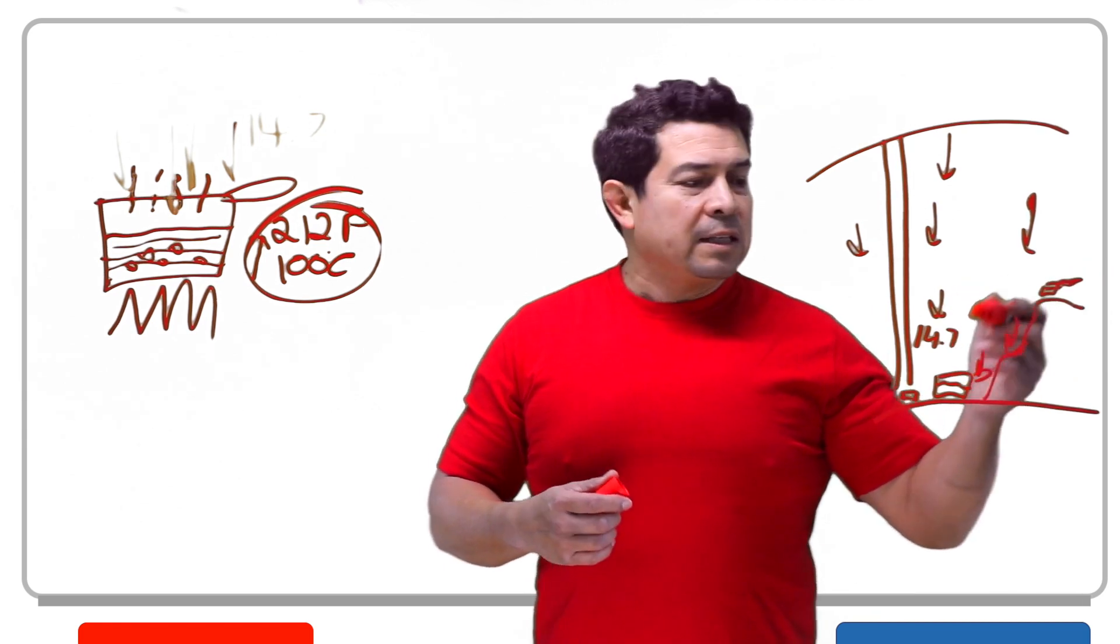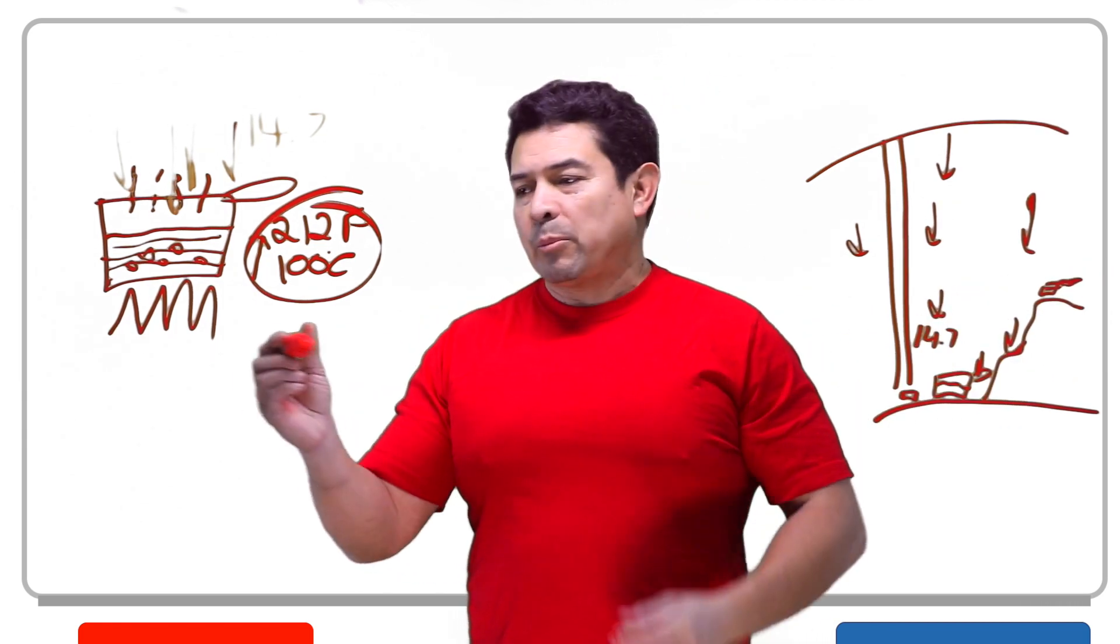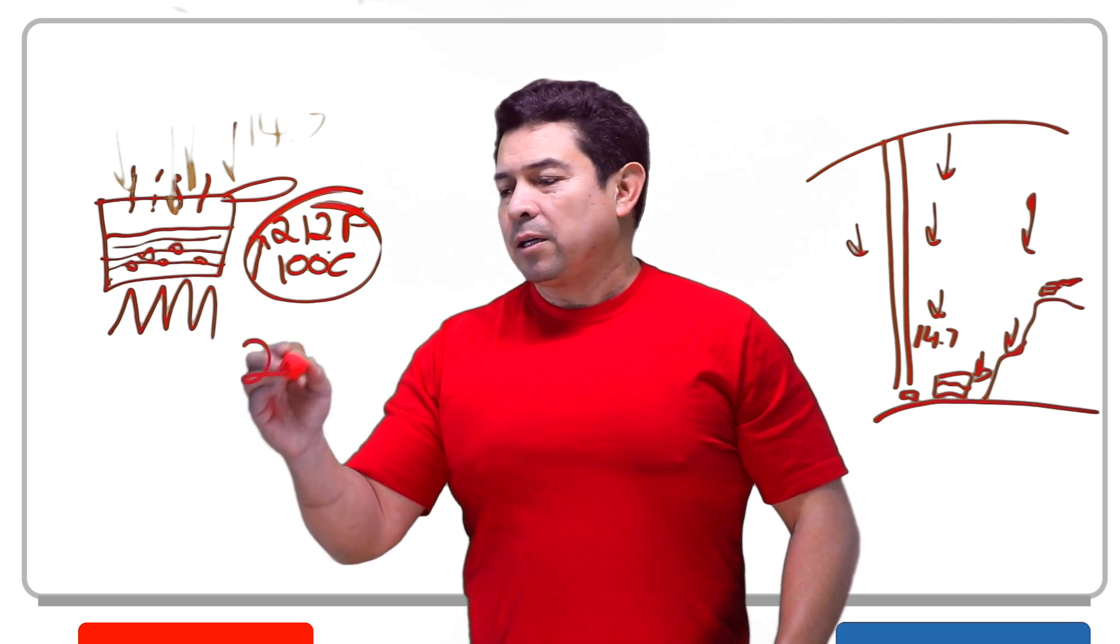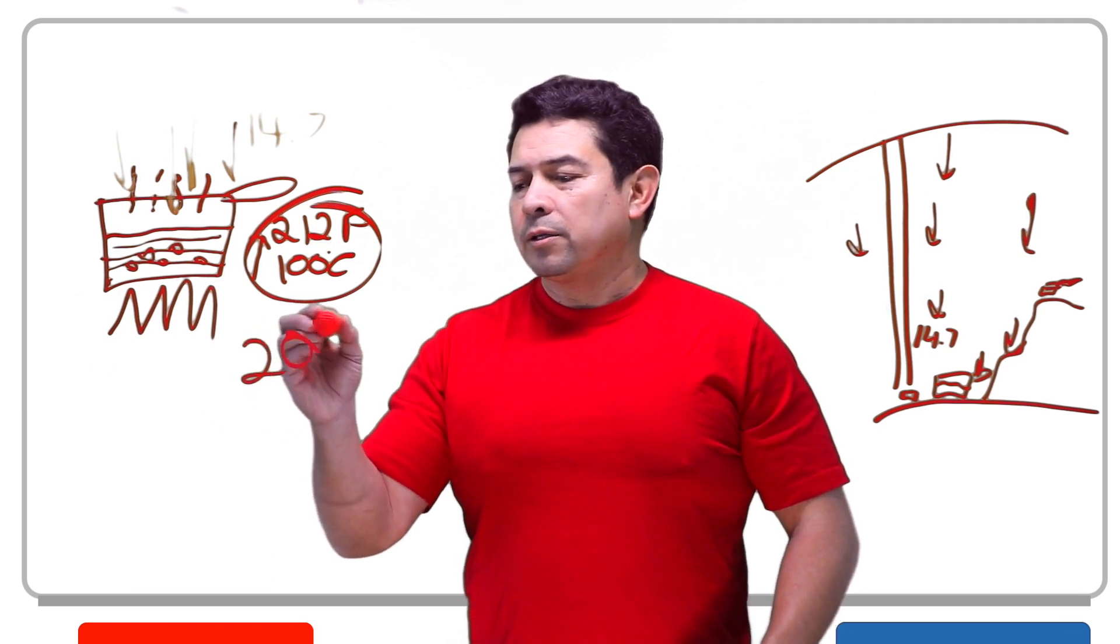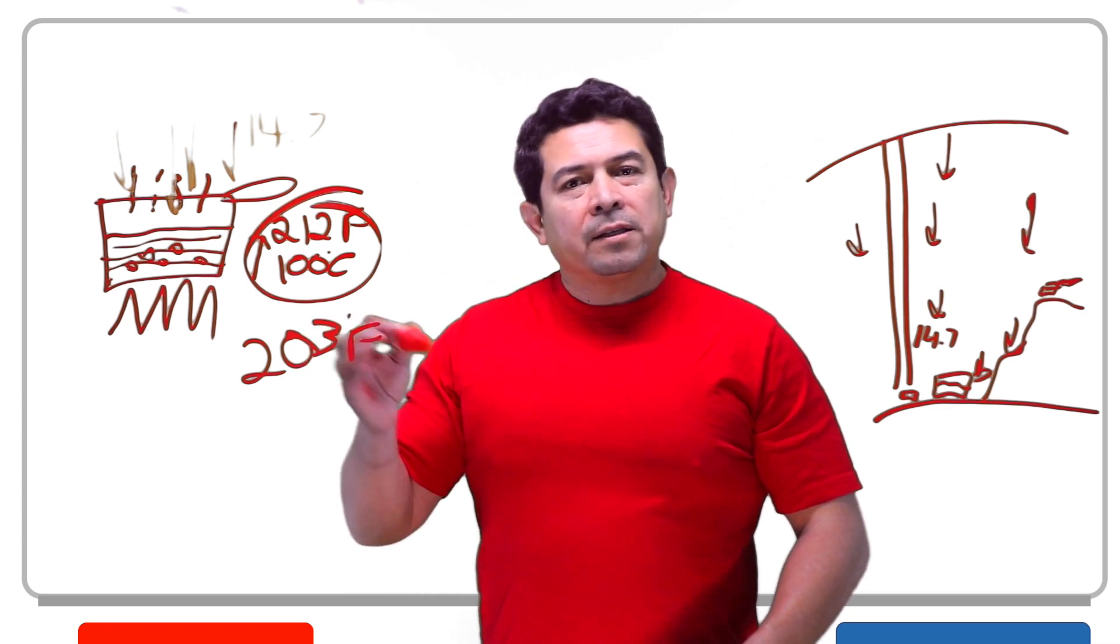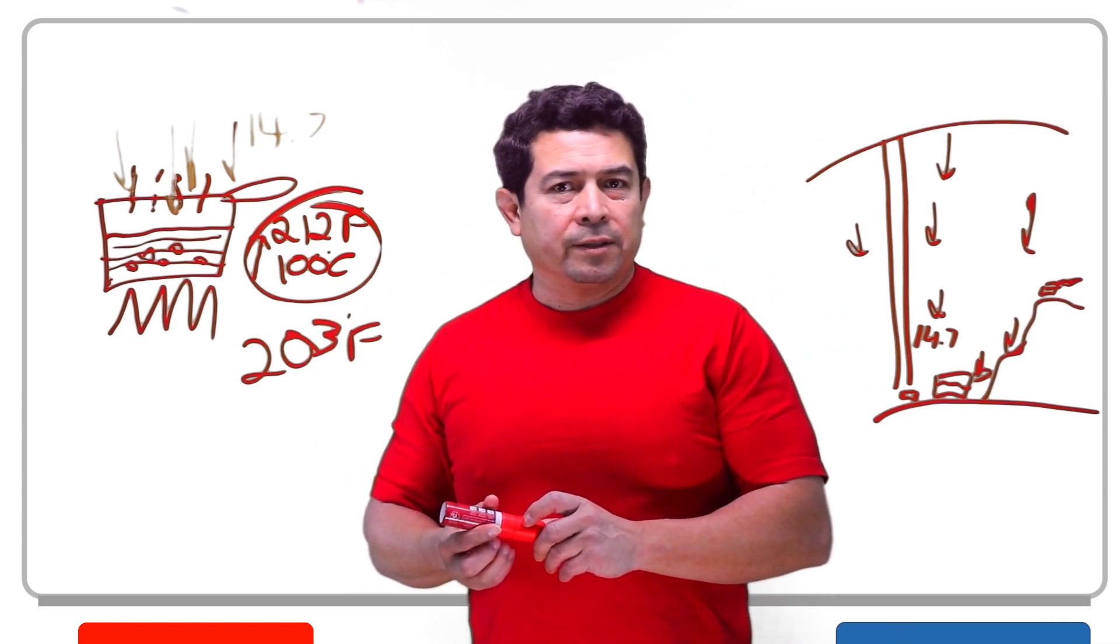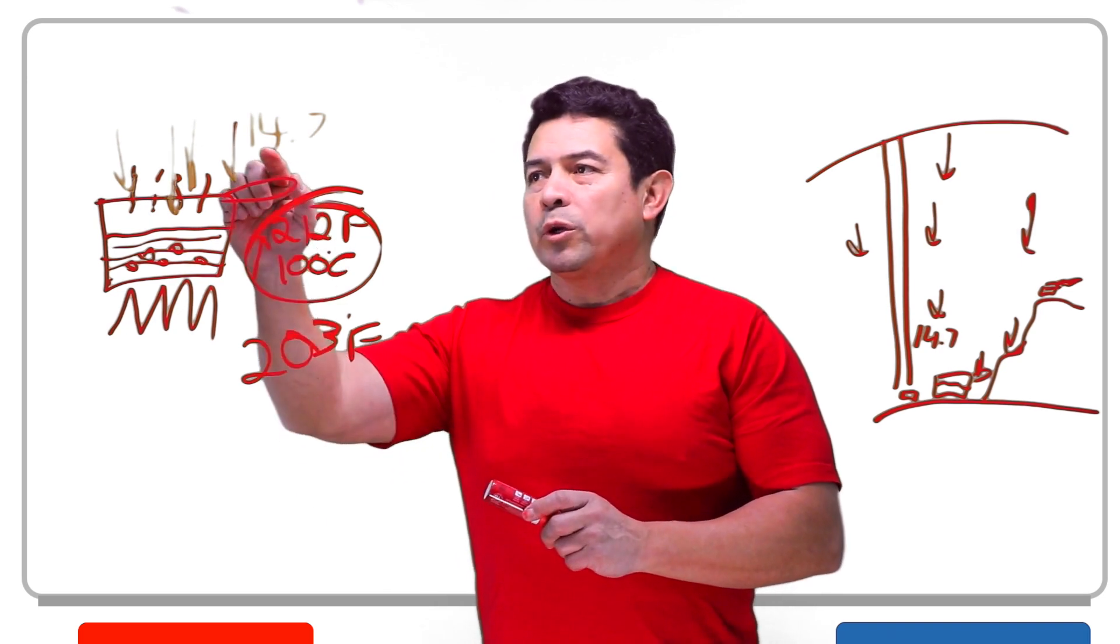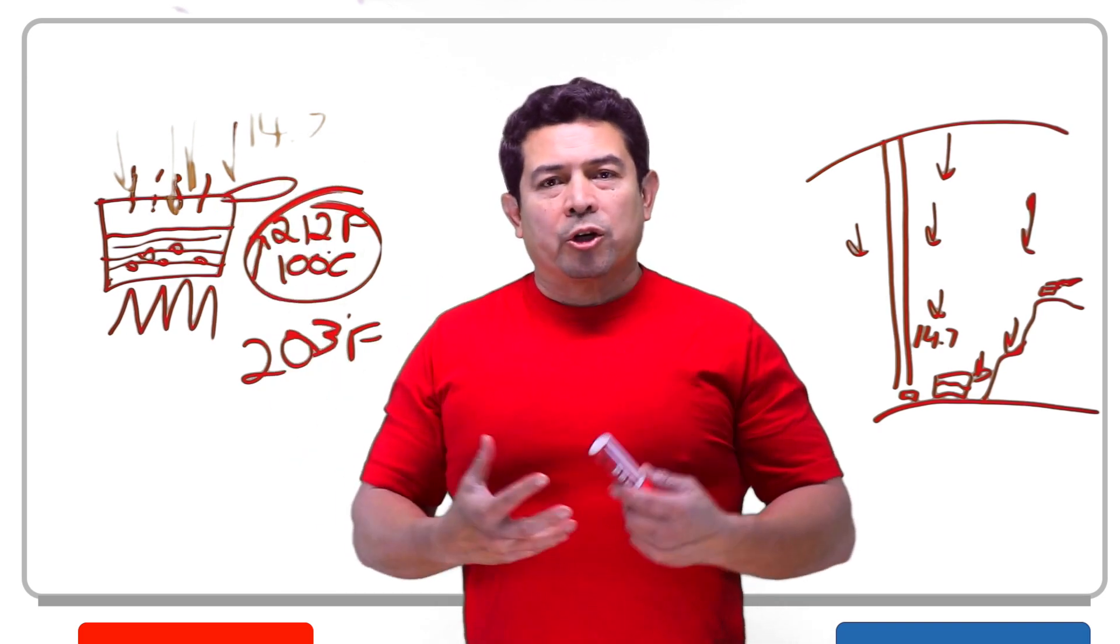Now we have that pot of water right there. That pot of water is not going to boil at 212. Now that pot of water is going to boil at approximately 203 degrees Fahrenheit. The temperature is going to be lower. Why is that? Well, that's because we don't have that much pressure. The pressure is less.